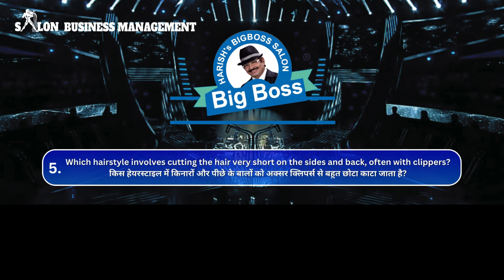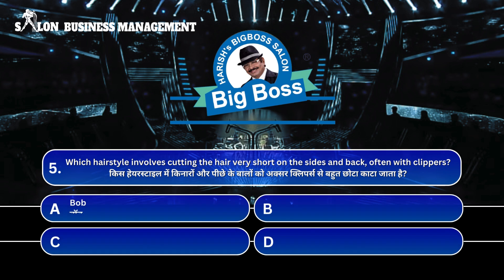Question 5. Which hairstyle involves cutting the hair very short on the sides and back, often with clippers? Kis hairstyle mein kinaaron aur peechhe ke baalon ko aksar clippers se bahut chhota kaata jaata hai? A. Bob, B. Pixie, C. Pixie, D. Blunt Cut.